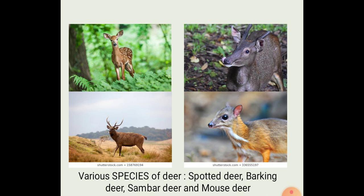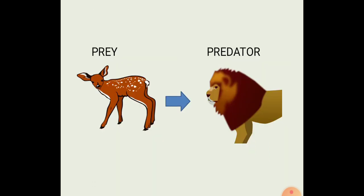There are two more terms to be understood. In the forest, if a lion is eating a deer, then the lion is a predator and the deer is a prey.